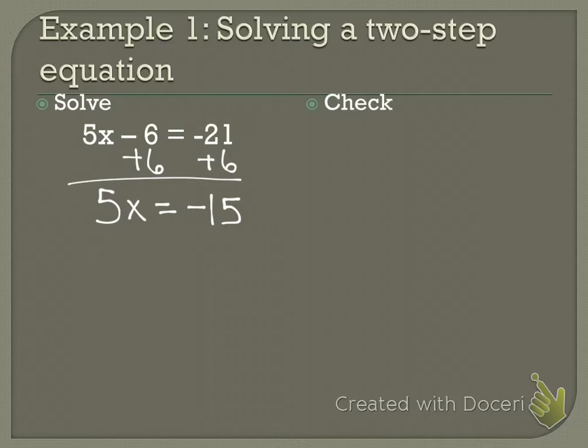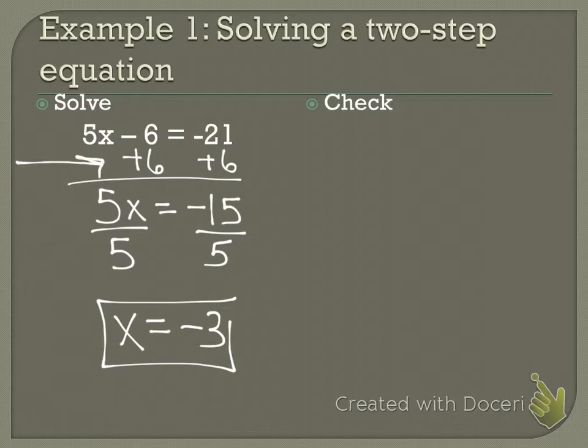So now 5x equals negative 15. But am I done? Do I have x by itself? You have to divide by 5. Divide both sides by 5, and now x equals negative 3. So my first step was to move what is not connected to the variable. My second step was to eliminate the number that was connected to my variable. That's why it's two steps.